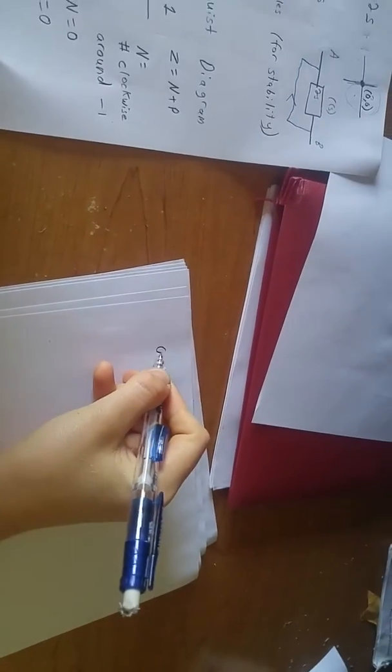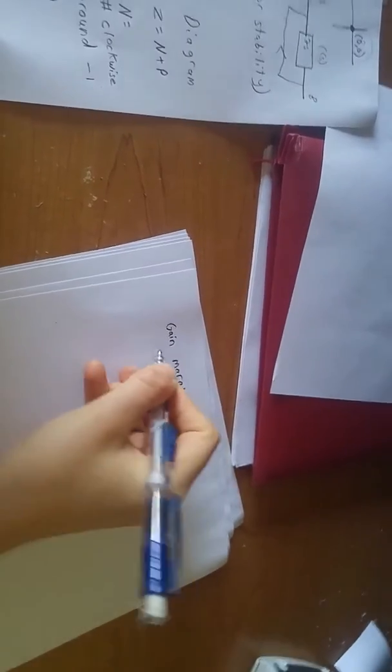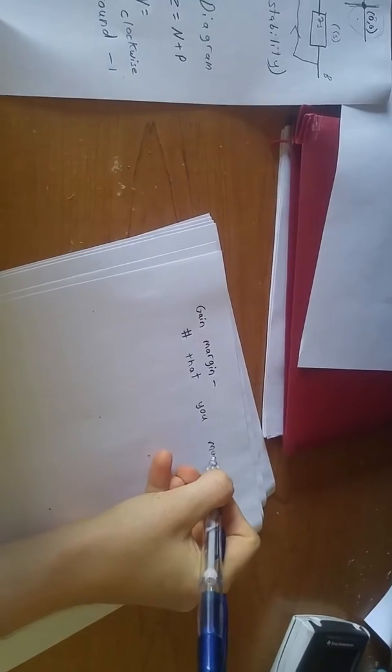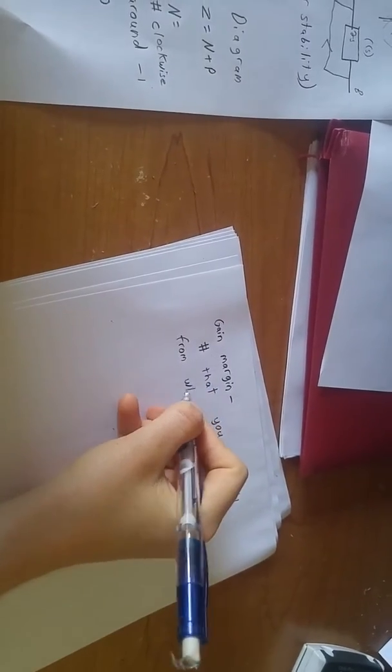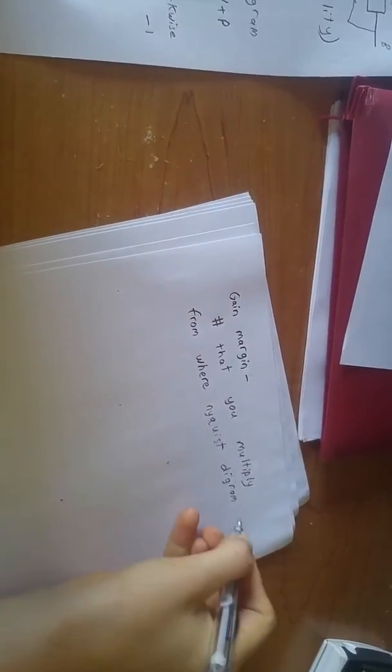By definition, gain margin is the number that you multiply from where the Nyquist diagram crosses the x-axis to get to the point minus 1. So, let's look at the diagrams that I made from the previous video.